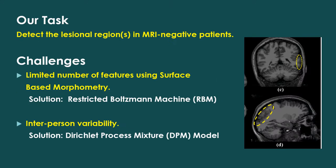Our task is to detect lesional regions for MRI-negative patients. Specifically, our model identifies the abnormal locations in a patient's brain, which in turn serve as focus areas for the neuroradiologists. Using this guidance, the neurologists place the EEG sensors on the patient's cortex.